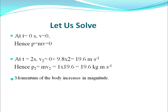At t = 2 seconds, the velocity v₂ = 0 + 9.8 × 2, using the formula v = u + at, where acceleration equals g = 9.8 m/s². So the final velocity v₂ = 19.6 m/s. Hence, momentum at t = 2 seconds: p₂ = mv₂ = 1 × 19.6 = 19.6 kg m/s. Here, the velocity and momentum of the body increases in magnitude as time increases.